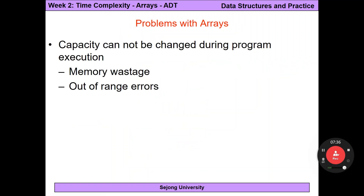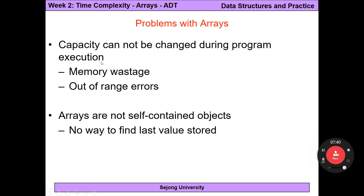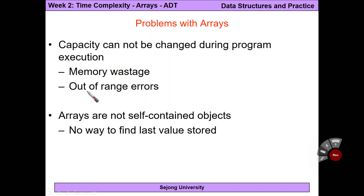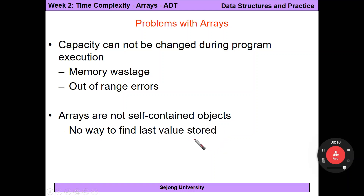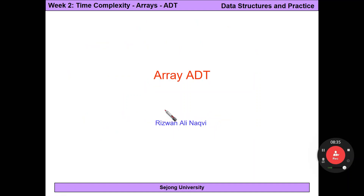Some problems with arrays: first, capacity cannot change during program execution. Second, memory can be wasted if a very large array is allocated. Third, out-of-range errors can occur if the allocated memory is too small. Fourth, arrays are not self-contained objects, so there is no built-in way to find the last value stored.